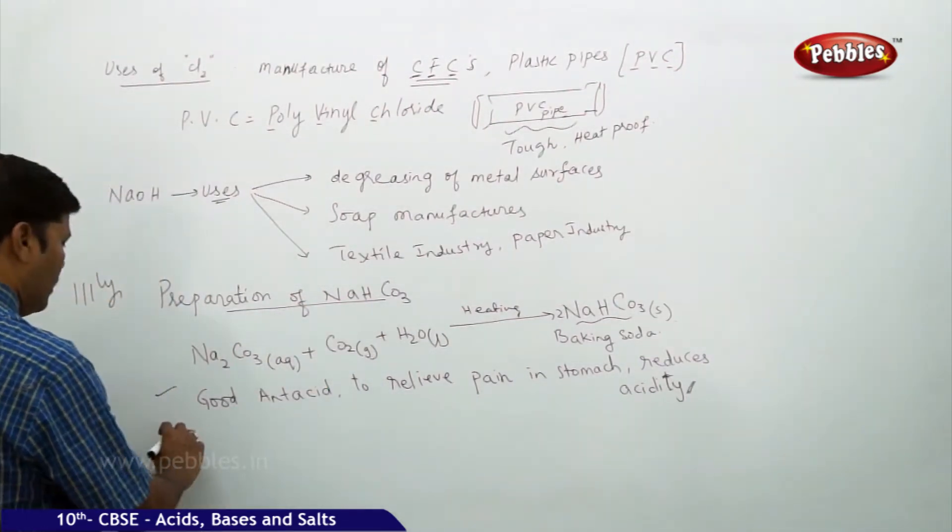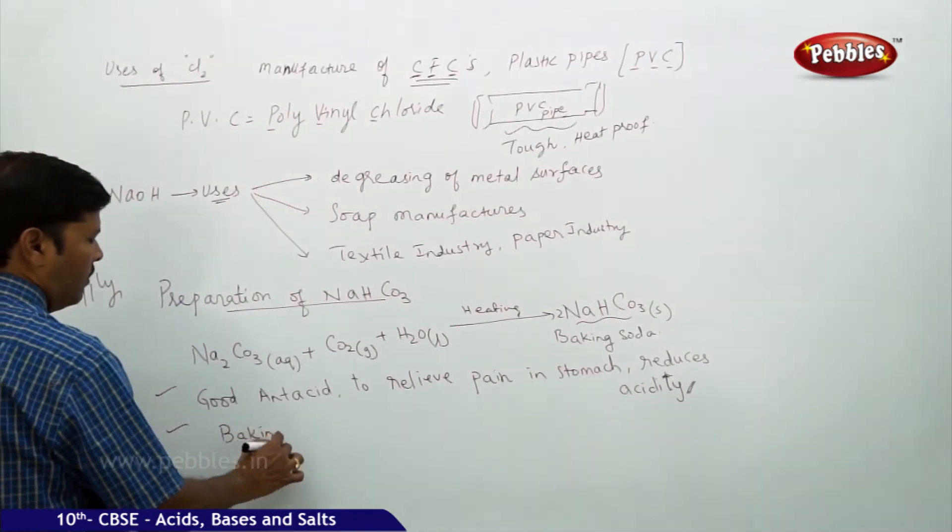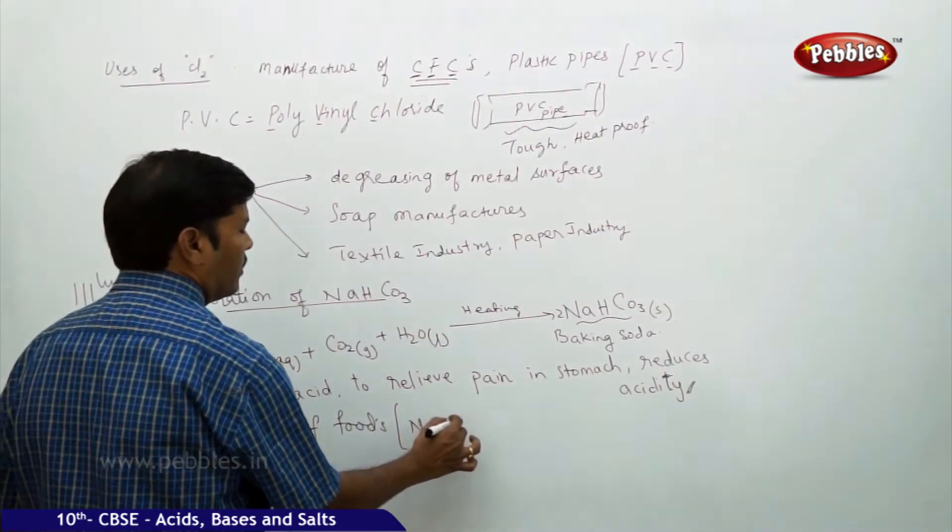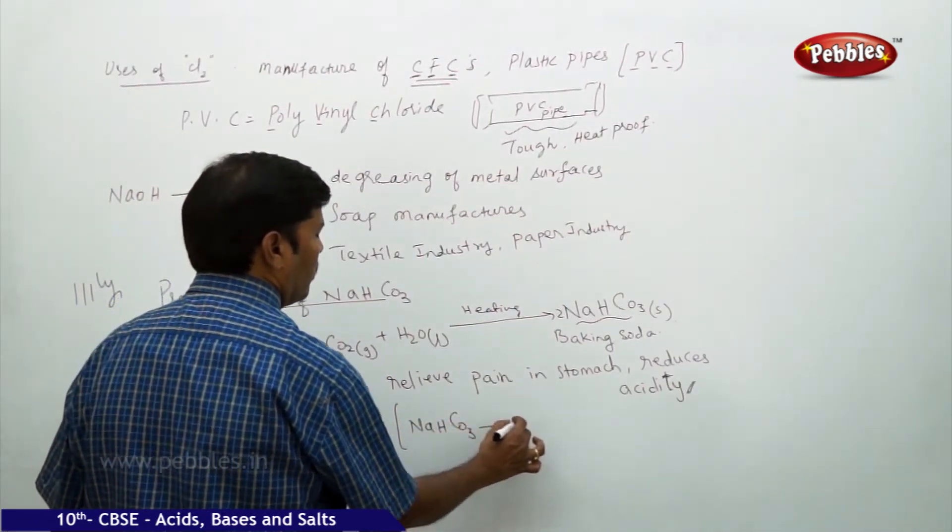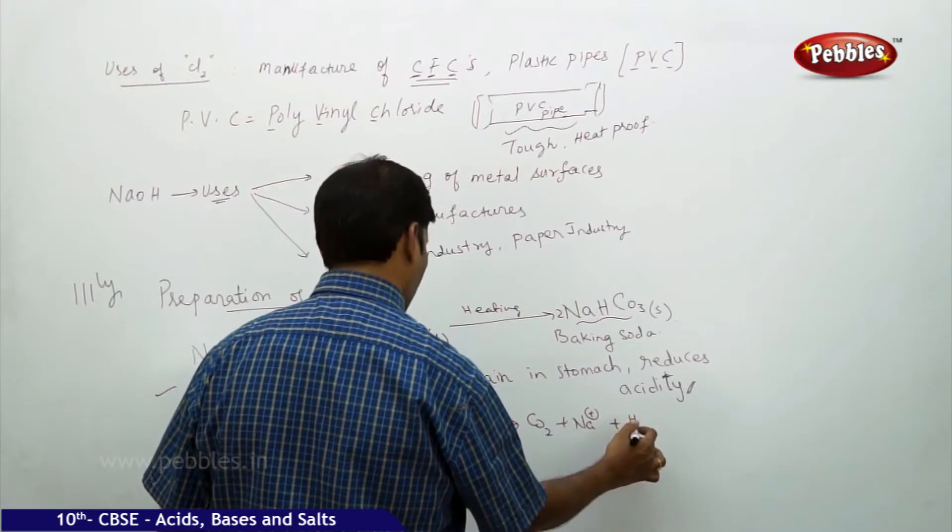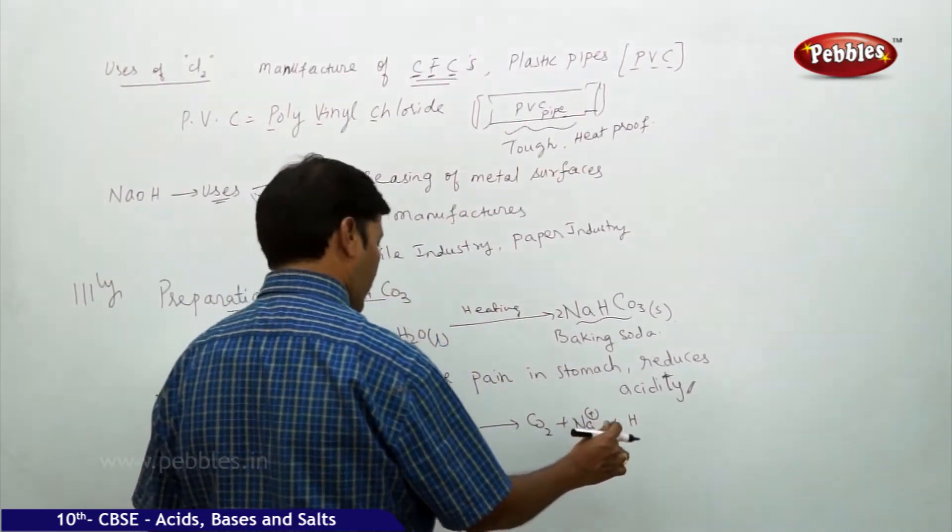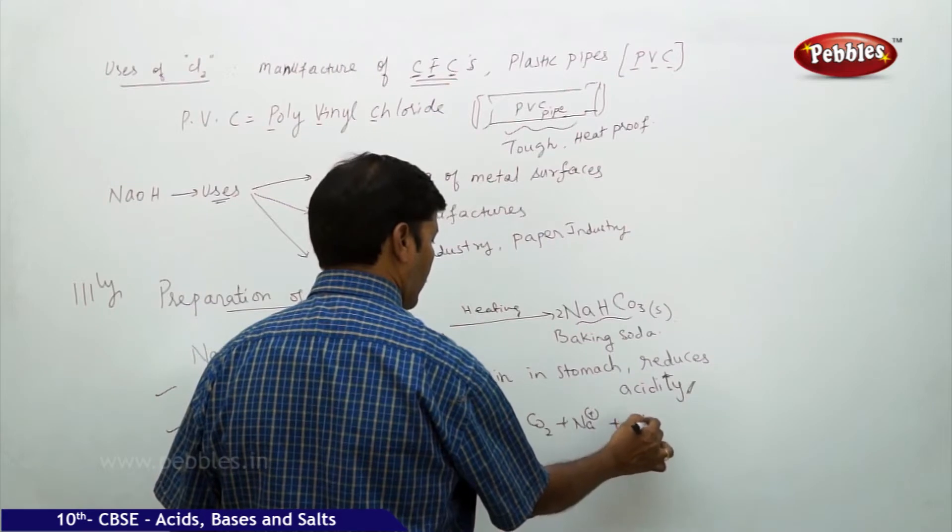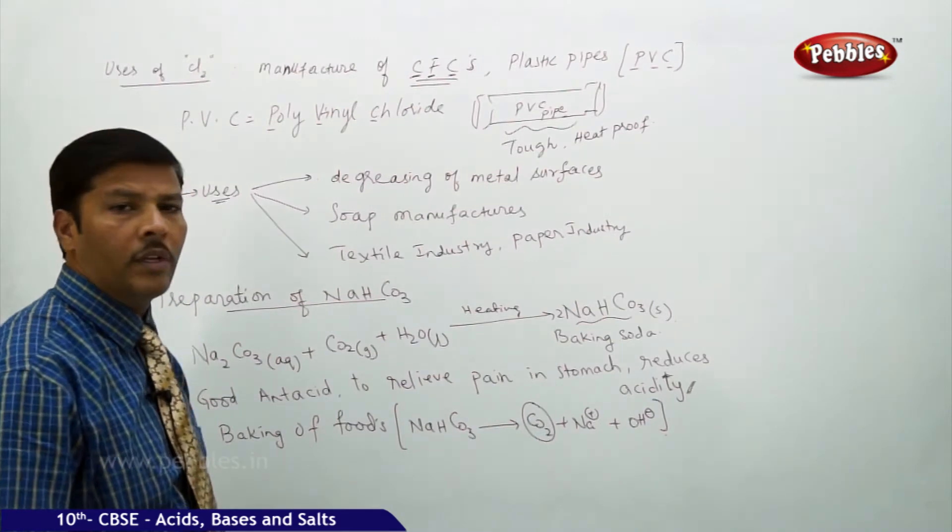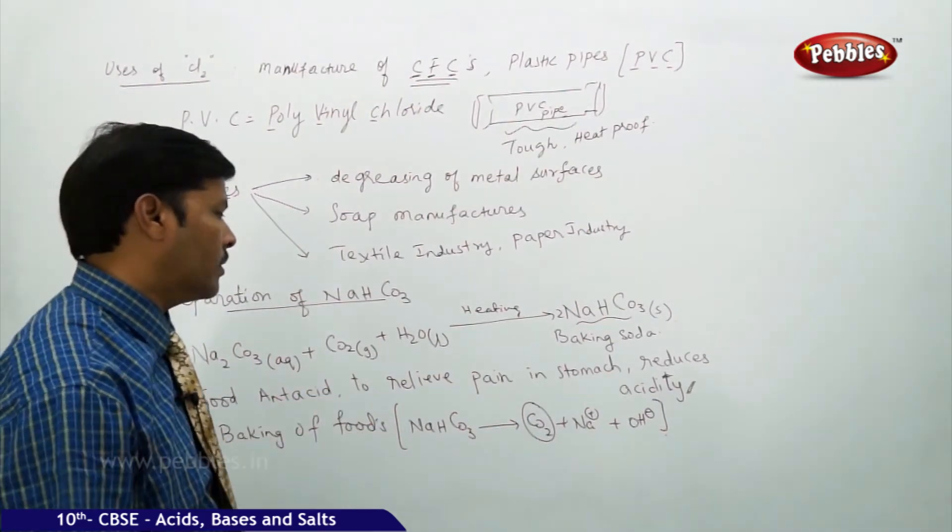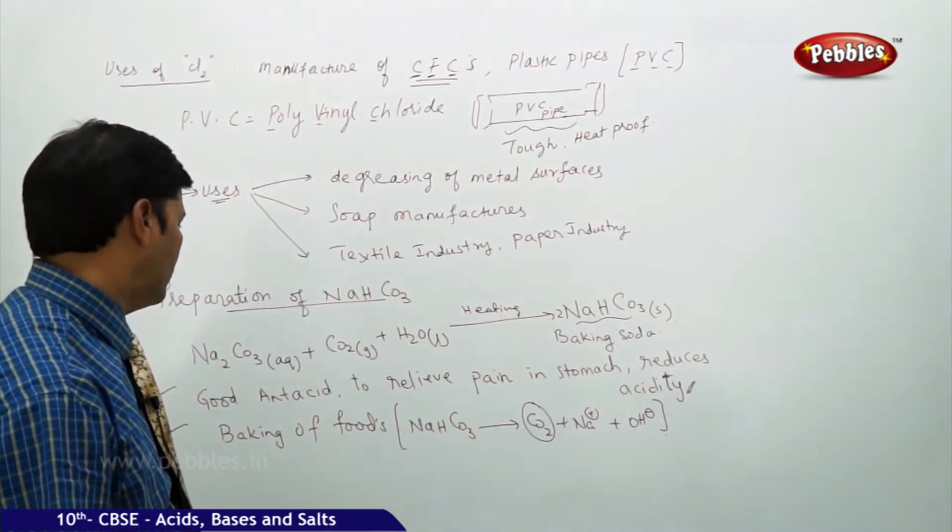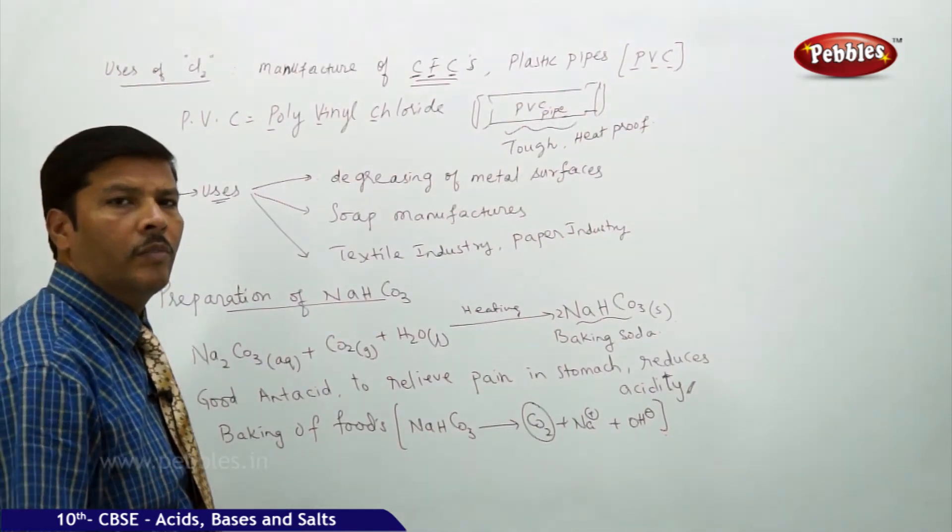It is also used in the baking of foods. Because of this property, sodium bicarbonate is unstable so it gives carbon dioxide, it gives one Na+ ion and also one OH- ion. This carbon dioxide is going to play a very important role in the swelled or expanded foods in the form of baked foods, that is the fast foods we generally consume in the metro areas.